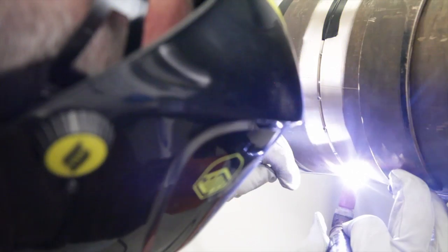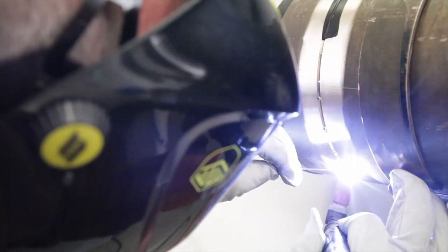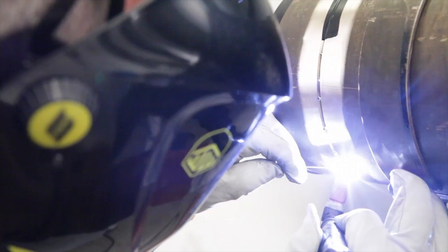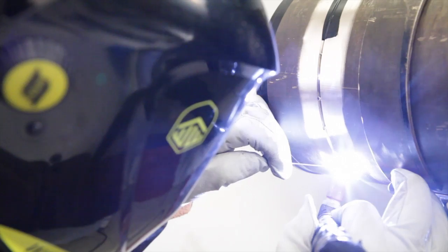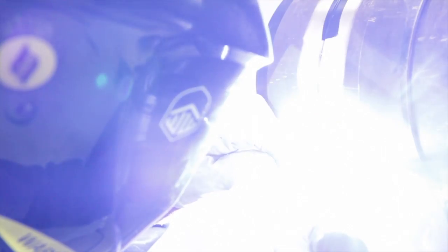You'll notice that we're using pulsation for our gas tungsten arc welding power. This is especially useful on thin-walled copper nickel pipes such as we're welding today. Also notice that here, as in every case, we're using the vertical up progression.